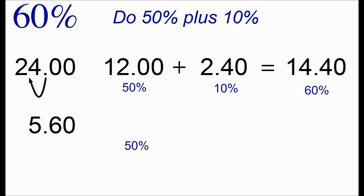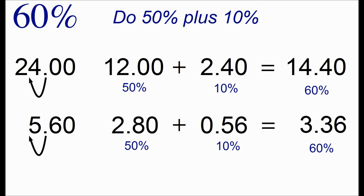For 5.6 we first calculate 50% by taking half. Then we calculate 10% by moving the decimal point over. And finally we add the two numbers together. So we get that 60% is 3.36.